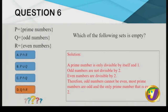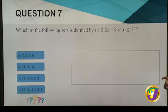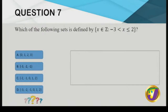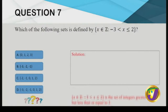Sets question seven: which set is defined by {x ∈ ℤ : −3 < x ≤ 2}? The ℤ symbol means integers. We need integers greater than −3 (so starting from −2) up to and including 2 (positive 2 is included). That gives {−2, −1, 0, 1, 2}. Answer: C.